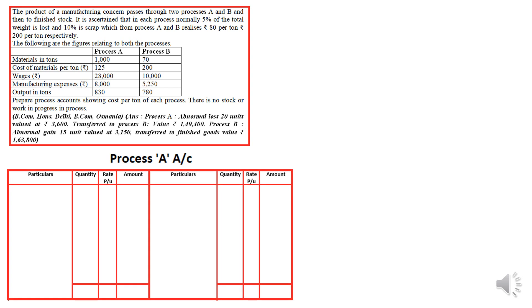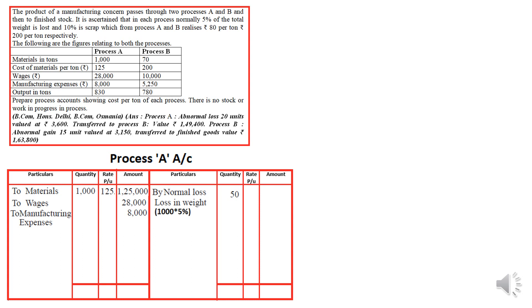Let's start the answer. In Process A account, we debit the expenditures. Material: 1000 units at ₹125 each — total ₹1,25,000. Wages: ₹28,000. Manufacturing expenses: ₹8,000. By normal loss: 50 units — that is 1000 units × 5%. Sale of scrap: 100 units (1000 × 10%), sold at ₹80 per ton, giving ₹8,000 income from sale of scrap.